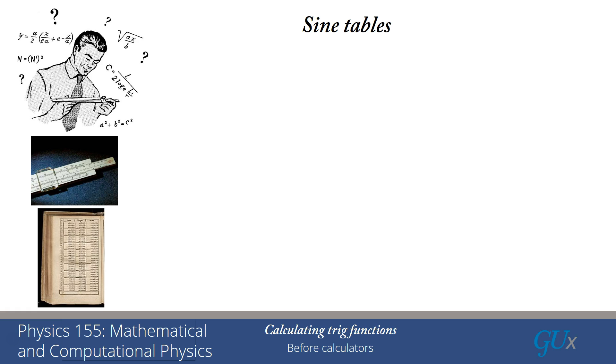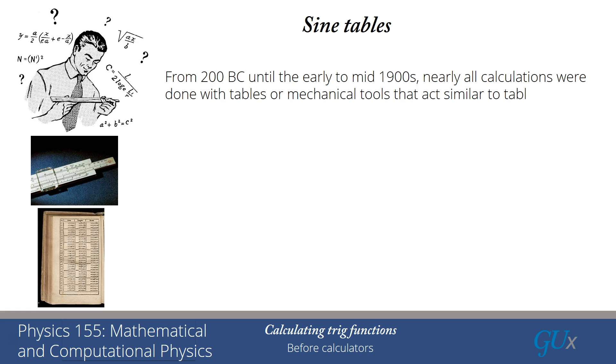So these intriguing pictures on the left-hand side are things that you probably have never seen before. But from 200 BC until the early to mid-1900s, nearly all calculations were done either with tables or with mechanical tools that act similar to tables. Like a slide rule, there also were some mechanical calculators that were around at that time.